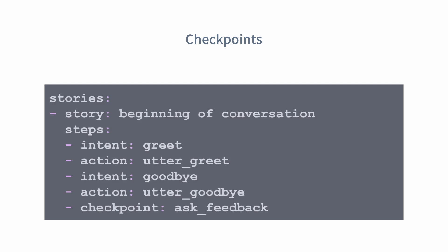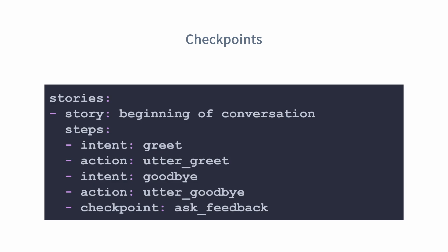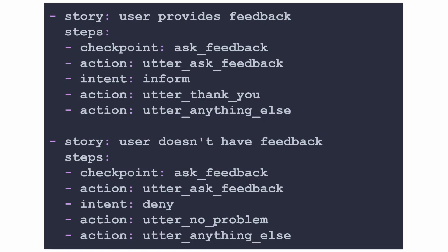You can also have checkpoints. In this example, the user says hi, the assistant says hi, the user says bye, the assistant says bye — and at that point there is a checkpoint called ask_underscore_feedback. You can use that checkpoint to start new stories. If the assistant asks for feedback and the user provides some using the inform intent, the assistant says thank you and asks if there's anything else. If the user says they don't want to give feedback, the assistant says no problem and asks if there's anything else.